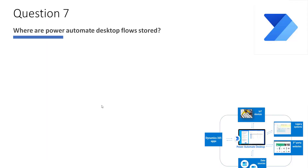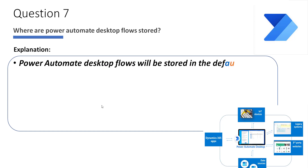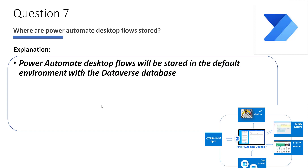The next question is: where are Power Automate Desktop Flows stored? Power Automate Desktop Flows will be stored in the default environment with the Dataverse database. This depends on the type of account you are using. If you are using a Work or School Account, users with the Dataverse database provisioned in the default environment can create and store Power Automate Desktop Flows there.